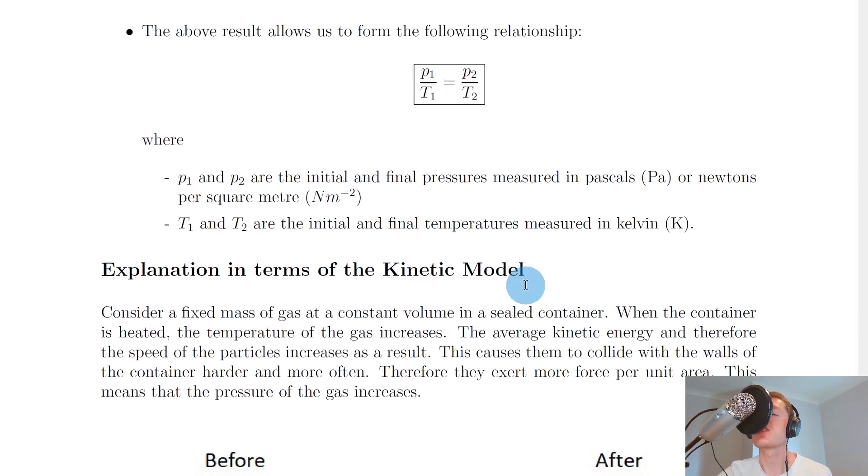So remember, whenever we've got something equals a constant, we can introduce some ones and twos here, some little subscripts. And that's because we'll be dealing with initial and final pressures, but also initial and final temperatures. So we have here P1 over T1 equals P2 over T2, where P1 and P2 are the initial and final pressures measured in pascals or newtons per square metre, and T1 and T2 are the initial and final temperatures measured in Kelvin.